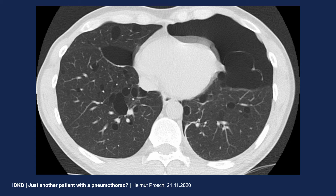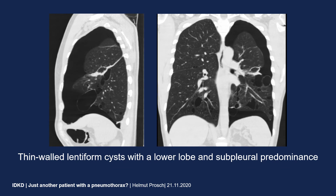Whenever you are dealing with a diffuse parenchymal lung disease, it's always important to look at the distribution. By looking at these coronal and sagittal displays, you will appreciate that there is a clear lower lobe predominance on both sides. There are some more cysts on the left side than on the right side, but these cysts are primarily located in the lower lobes. Most of these cysts are located close to the pleura, and many of them show a lentiform shape.